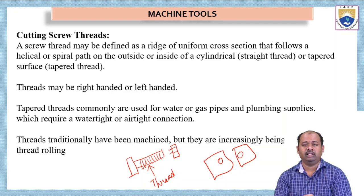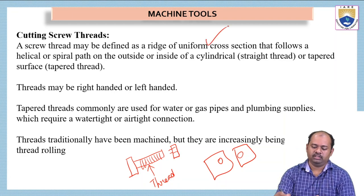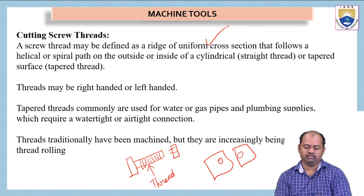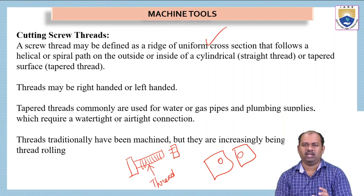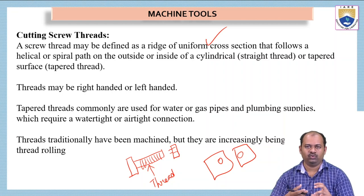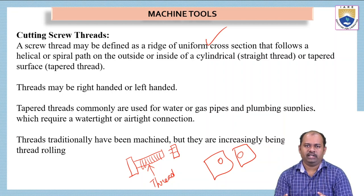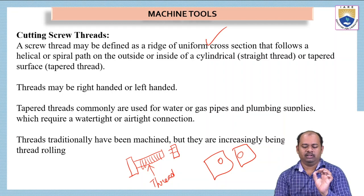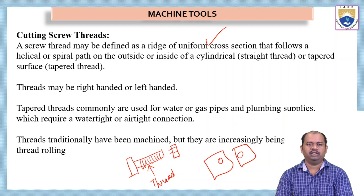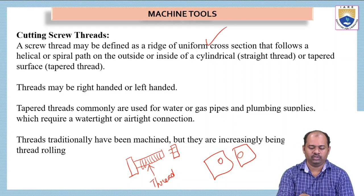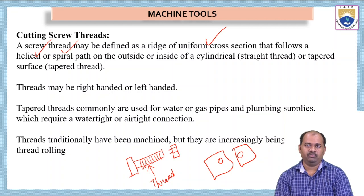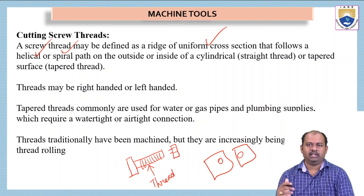A screw thread may be defined as a ridge of uniform cross section. It should be uniform cross section — otherwise we cannot get a smooth movement of the thread or a smooth motion when we want to screw it. The path followed is a helical or spiral path, which is also important — helical or spiral path has to be taken when we are doing this thread cutting.